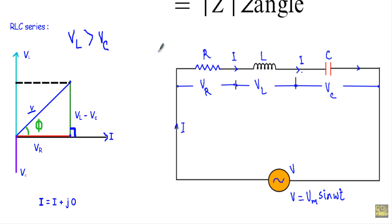Now I will show you the impedance of an RLC series circuit. We have resistance R in series with inductance L and capacitance C, and we apply an alternating voltage V equal to Vm sin(ωt), whose RMS value is V. The RMS current flowing in the circuit is I, and the ratio of this voltage V to current I will be our impedance Z.